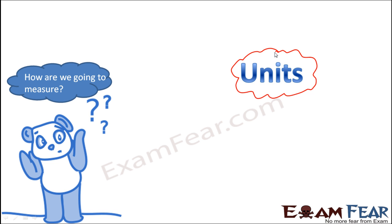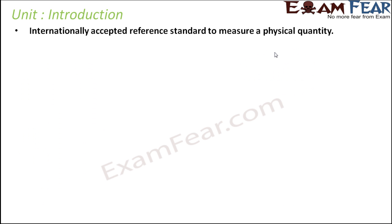So there we introduce the concept of units. Units help us to measure anything. These are internationally accepted reference standards to measure a physical quantity. Anything like distance, speed, weight, or mass — these are all different physical quantities. In order to measure distance, we need some reference, and that reference has to be internationally accepted so that the same reference holds true in different parts of the world. Such reference standards are called units.